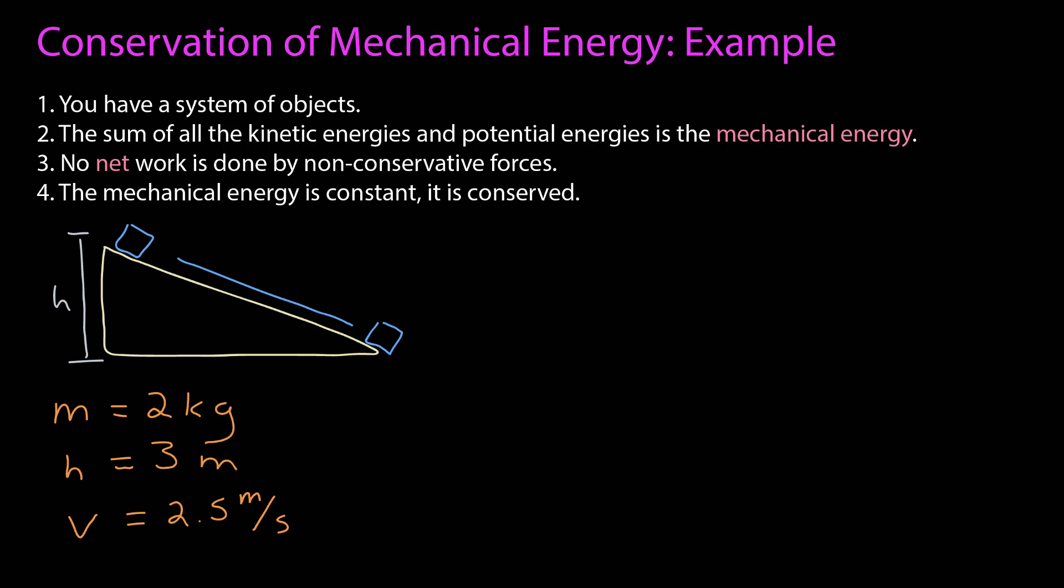Let's look at this system. So I have an object sliding down a frictionless incline. The mass is two kilograms, it starts three meters above the ground, and it starts with a speed of 2.5 meters per second. What is the speed when it reaches the ground?